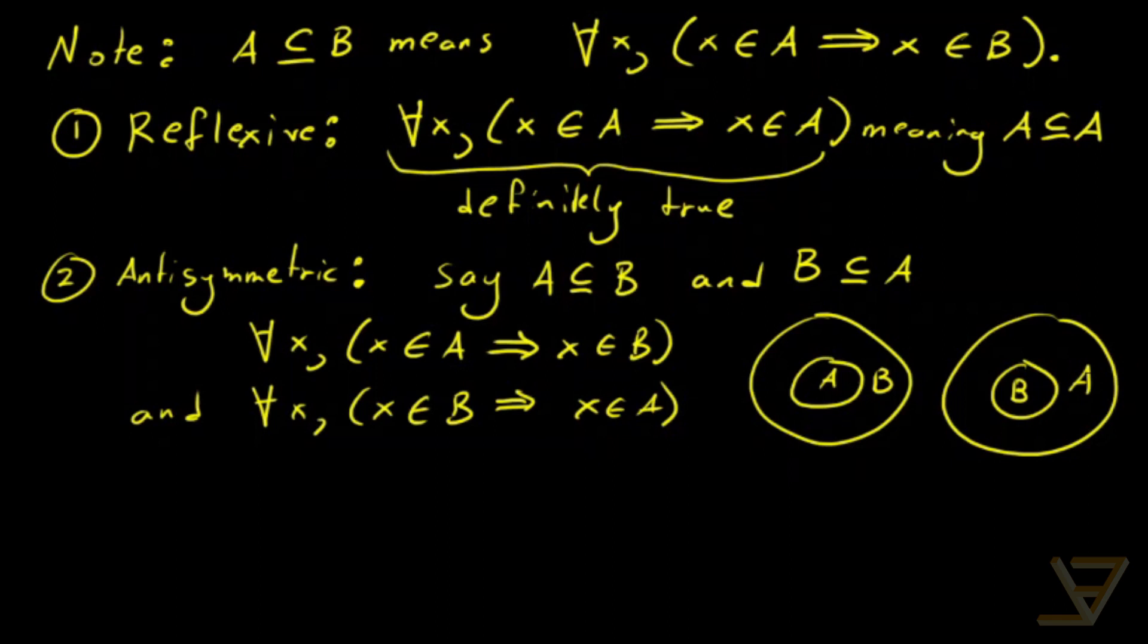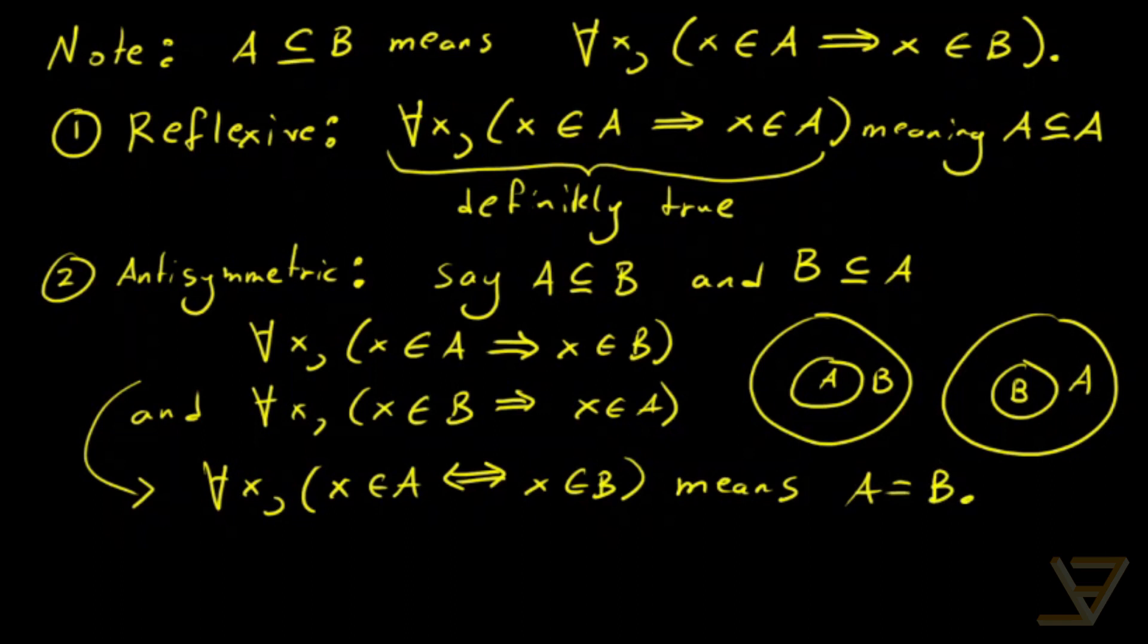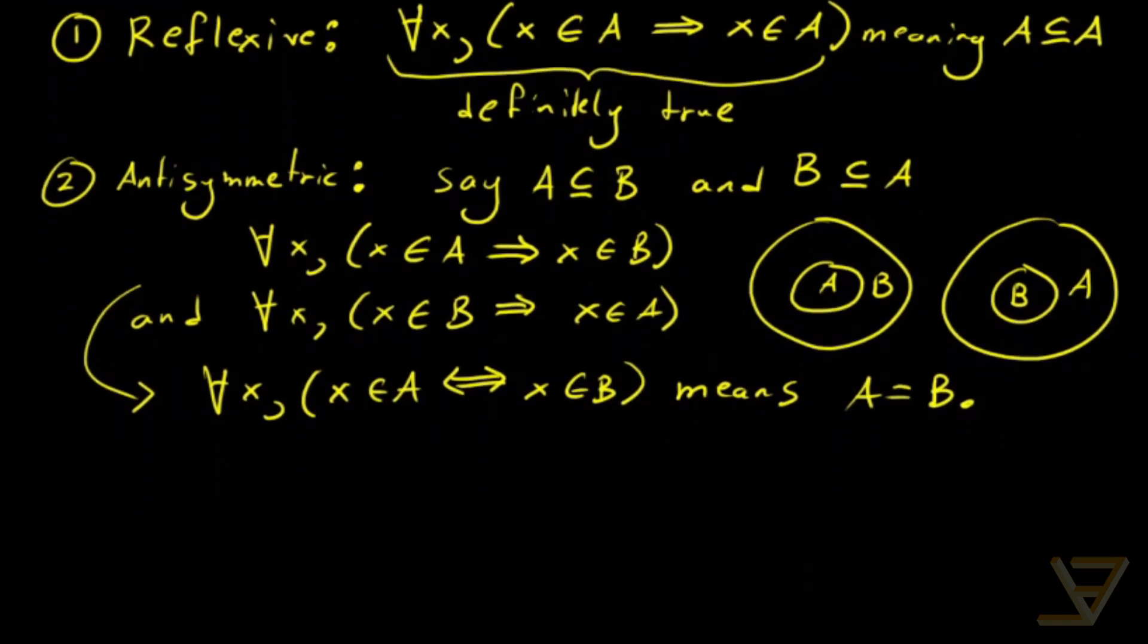So it should intuitively make sense that A and B are the same set. And indeed this is true because these two facts together tell us that for all x, x is in A if and only if x is in B. Which means A equals B as desired.